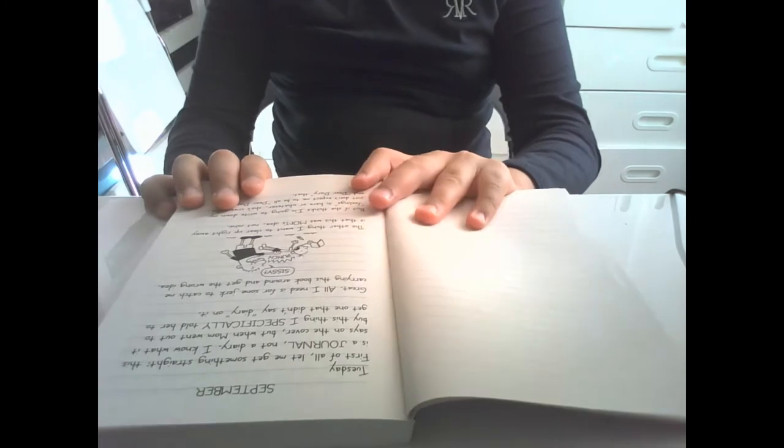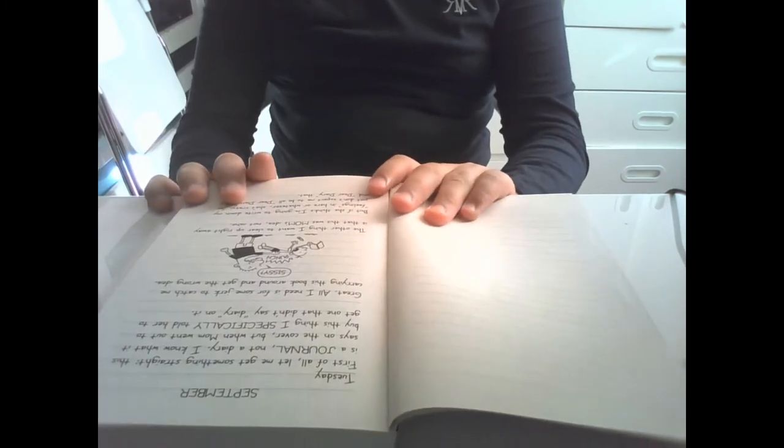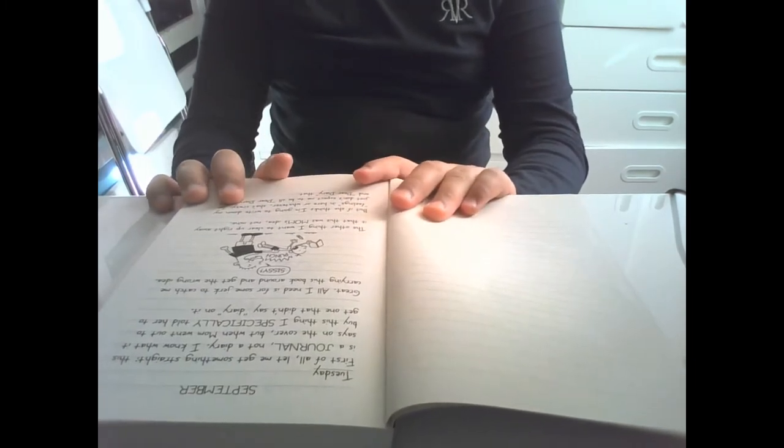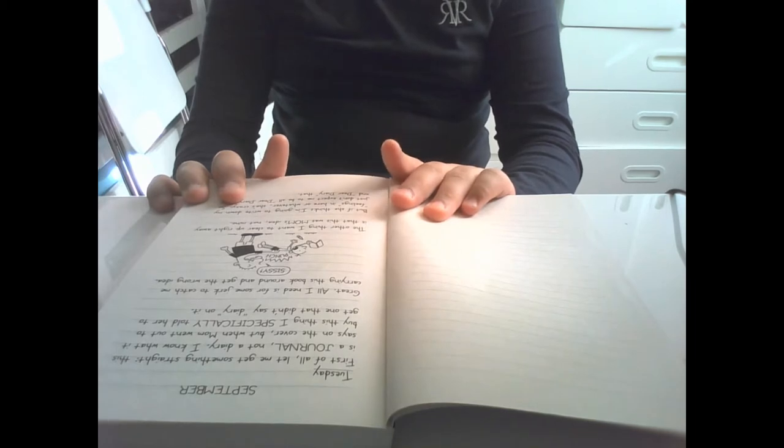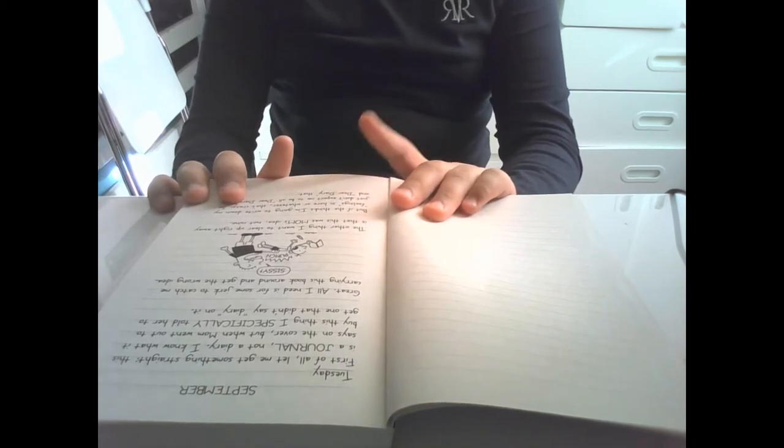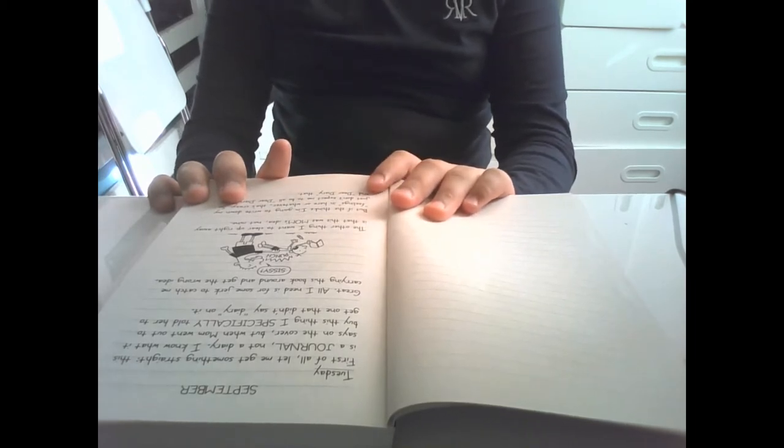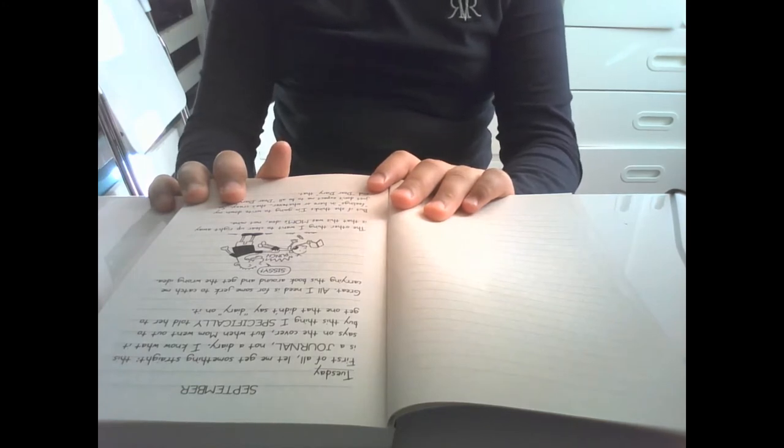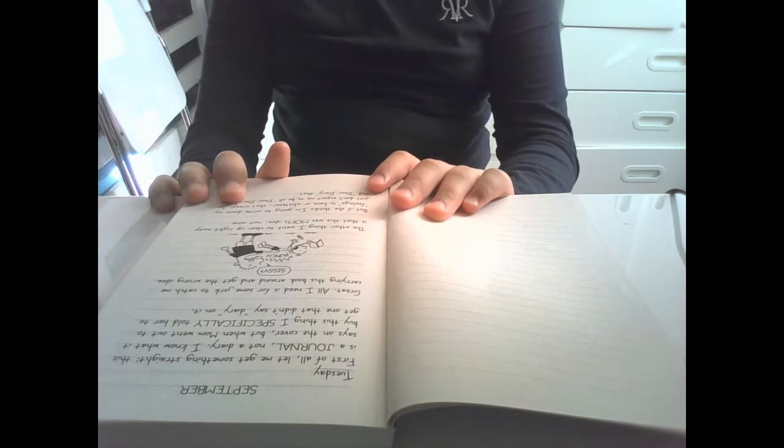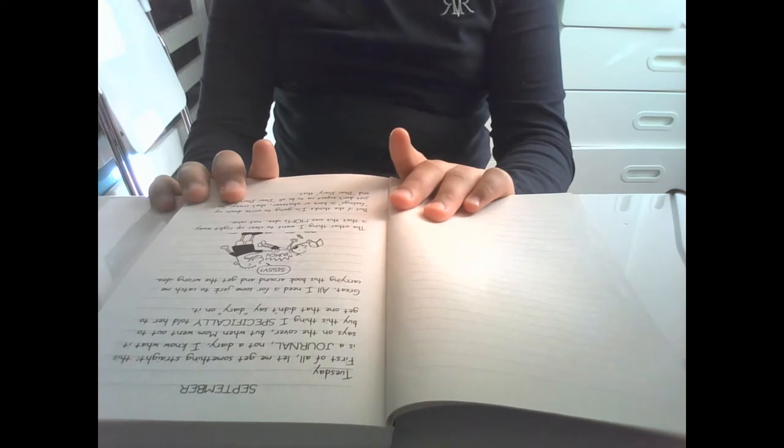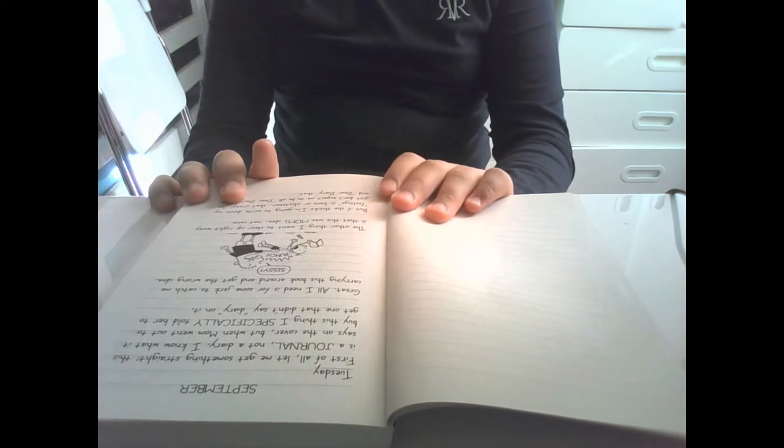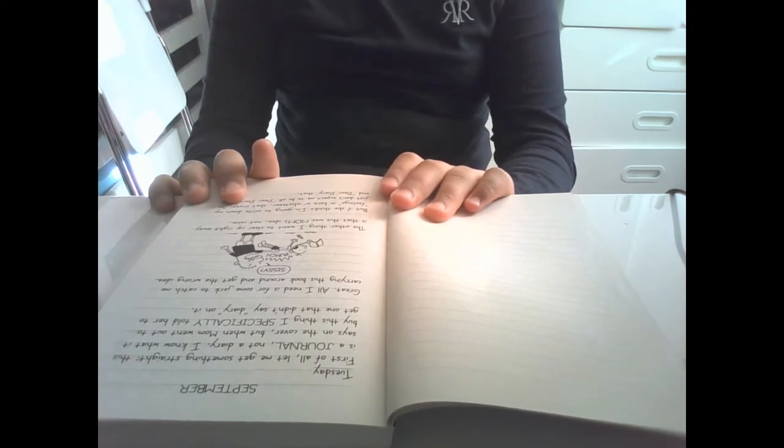First of all, let me get something straight. This is September and Tuesday and this is a journal, not a diary. I know what it says on the cover but when mom went out to buy this thing, I especially told her to get one that didn't say diary on it. Great. All I need is for some jerk to catch me carrying this book around and get the wrong idea.